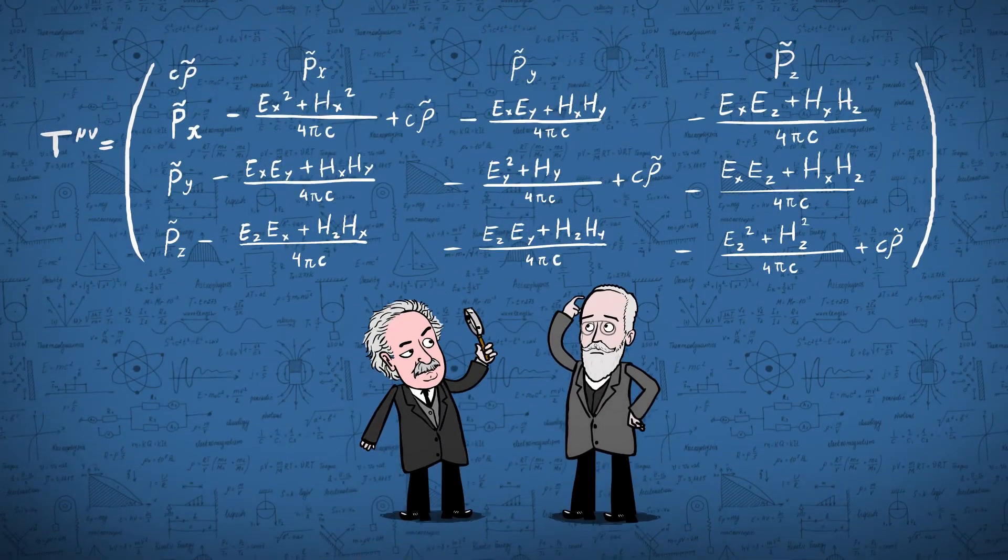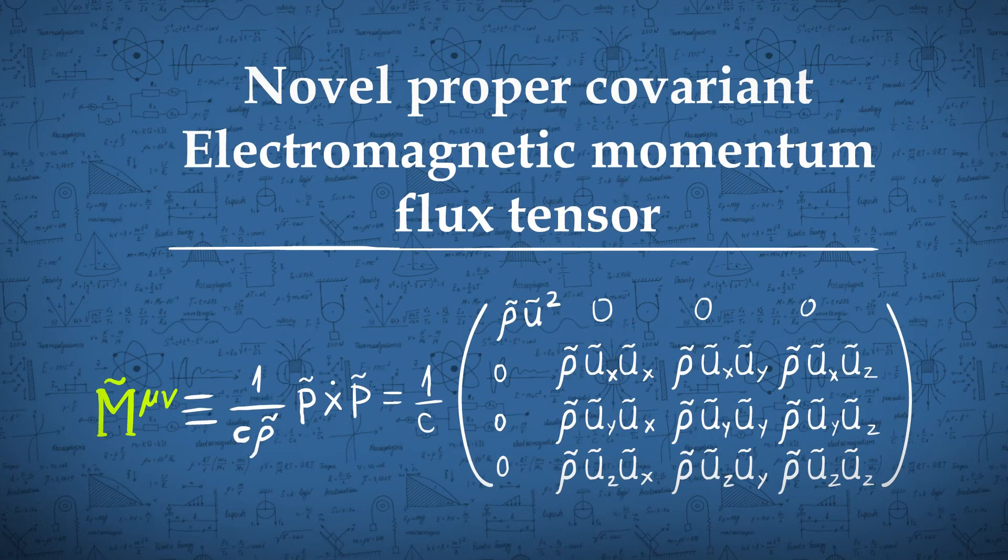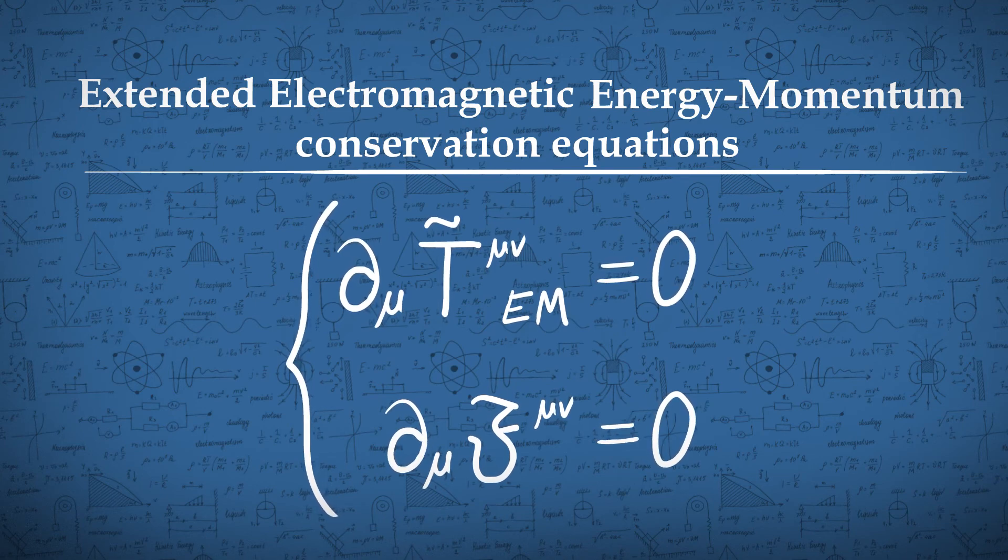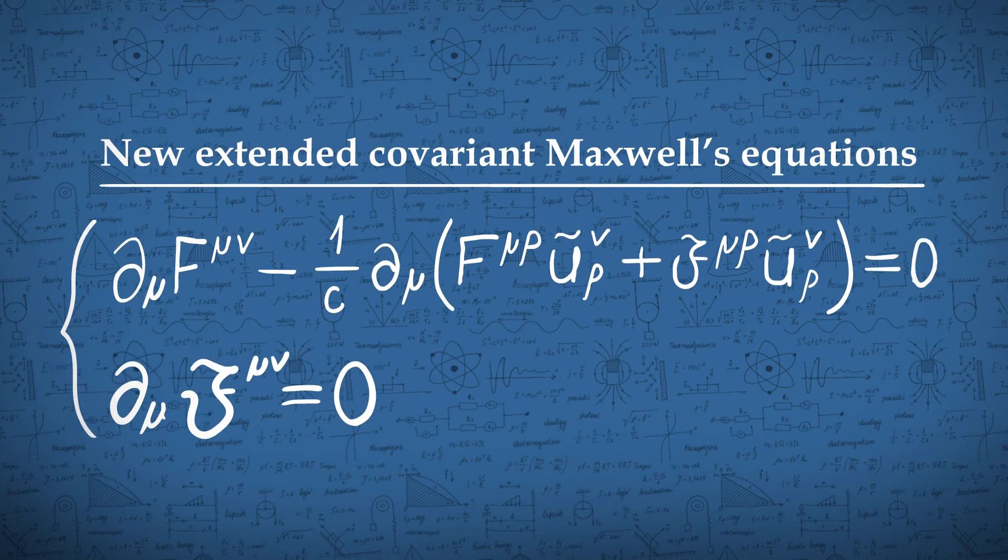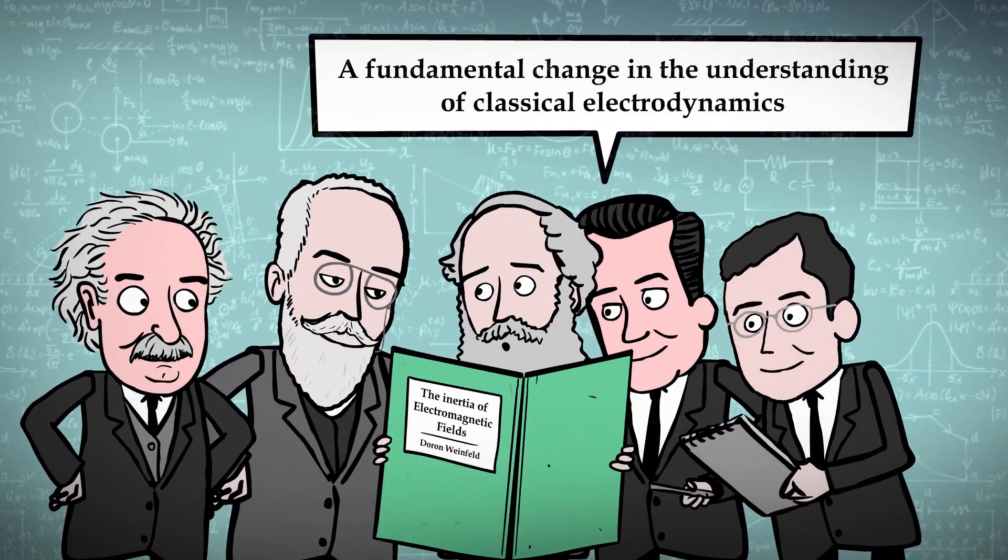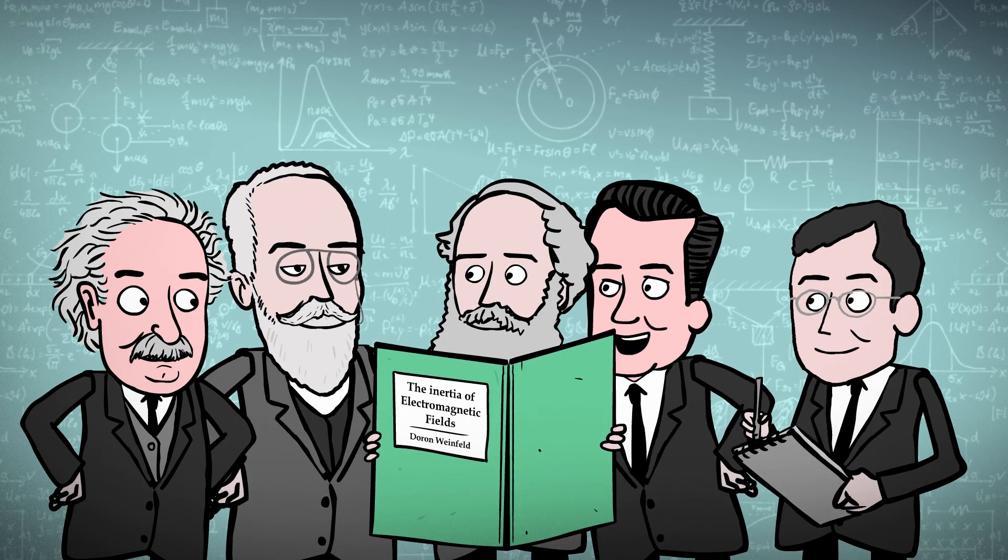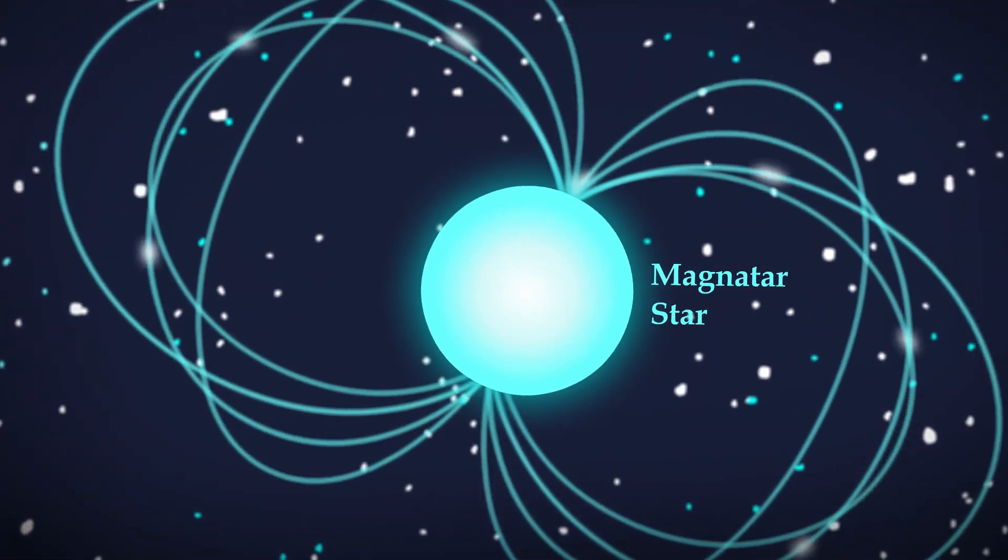To summarize, we identified that Minkowski's tensor is missing the electromagnetic momentum flux, so we defined a new proper covariant electromagnetic momentum flux tensor and a new extension to the electromagnetic energy momentum conservation equations, as well as a new extension to Maxwell's equations to include the momentum flux terms. The new equations present a fundamental change in the understanding of classical electrodynamics that helps to solve many old and new paradoxes where strong electromagnetic fields are present, from the macroscopic size of galaxies to the microscopic sizes of particles.